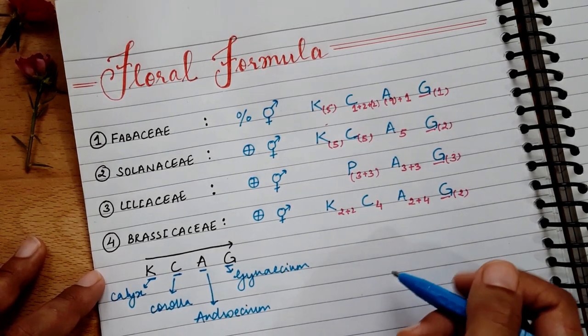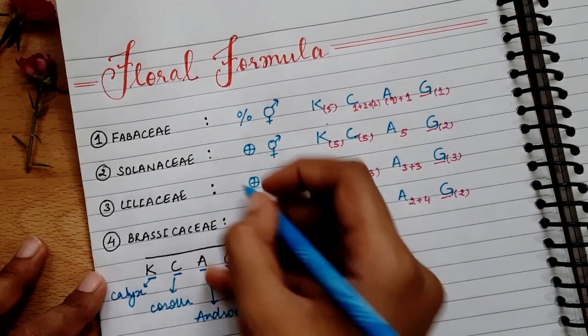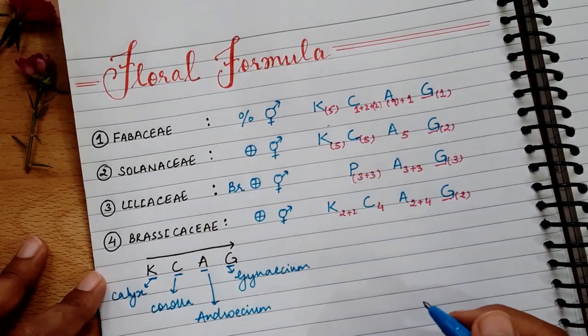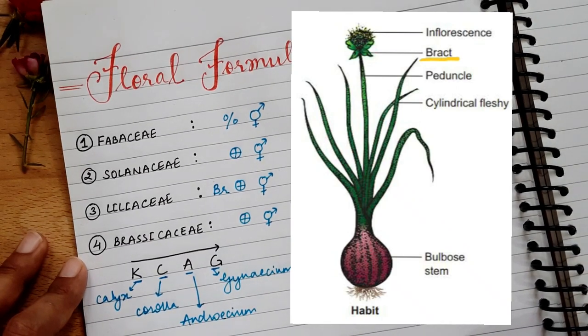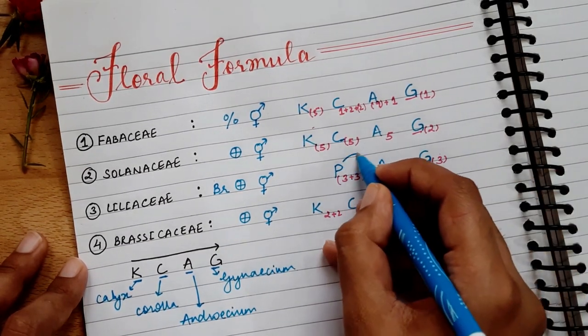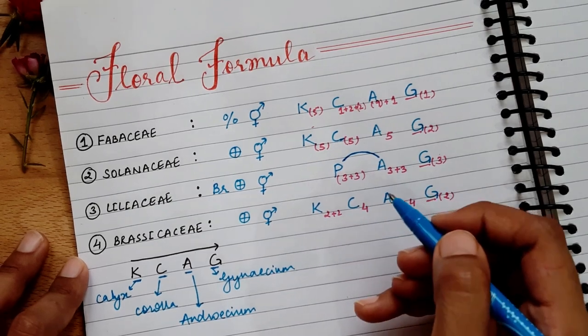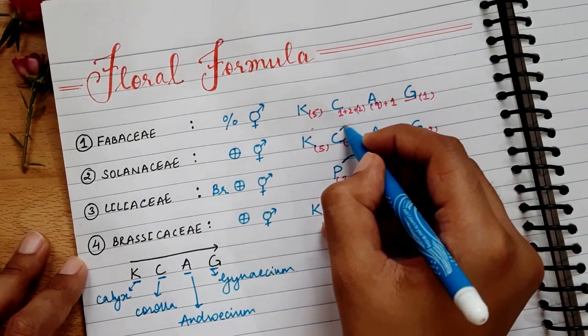Now the four families are only bracted. We will write Br. When a flower is attached with a leaf, we call it bract, as you can see in this diagram. Now lastly, we will show the addition between P and A, and between C and A.